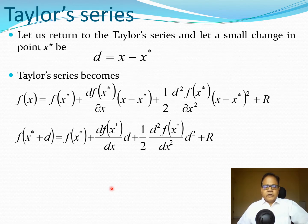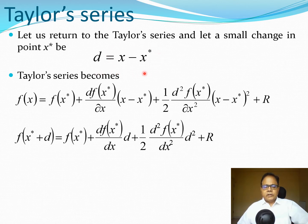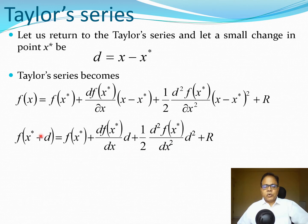We can rewrite the Taylor series in a form more suitable for optimization. Define a small change d = x - x*, approximating that x is in the neighborhood of x*. We replace x by x* + d, so all the (x - x*) terms are replaced by d. This cleans up the classical Taylor series and we can write it compactly in terms of d.